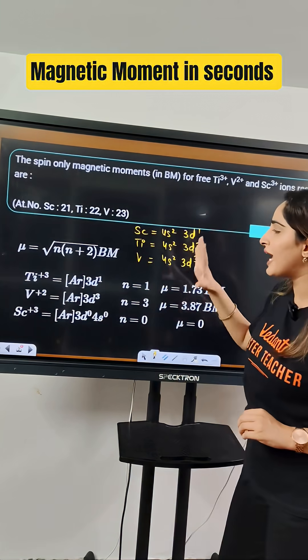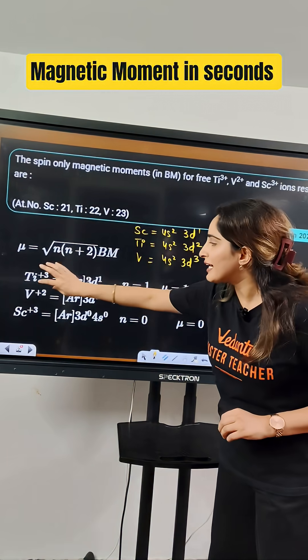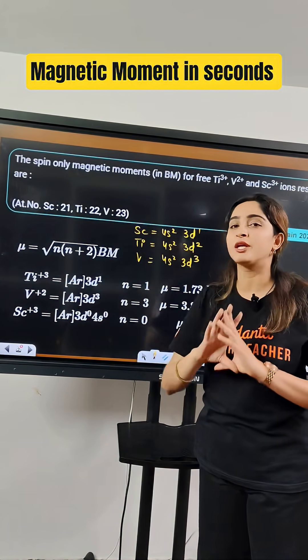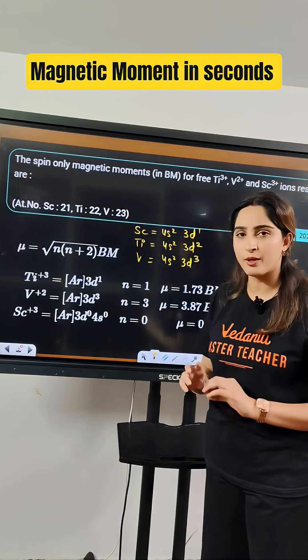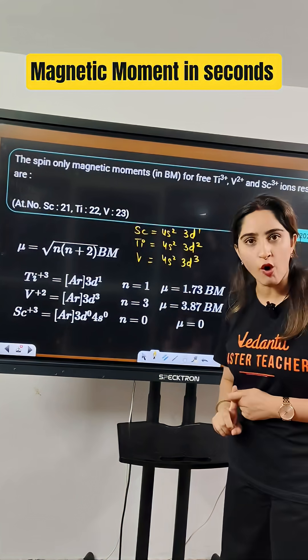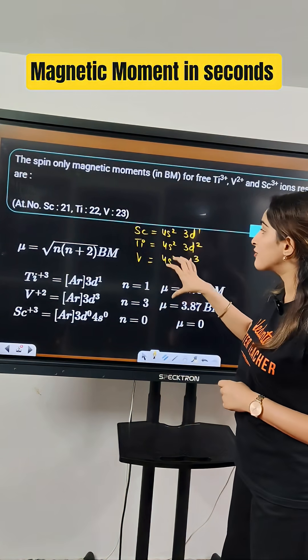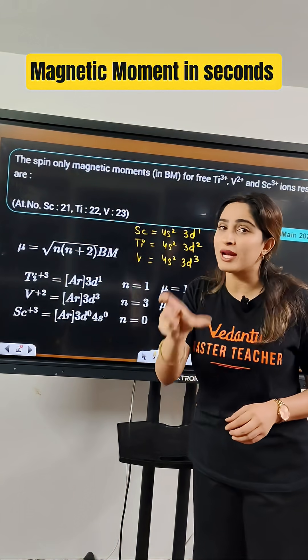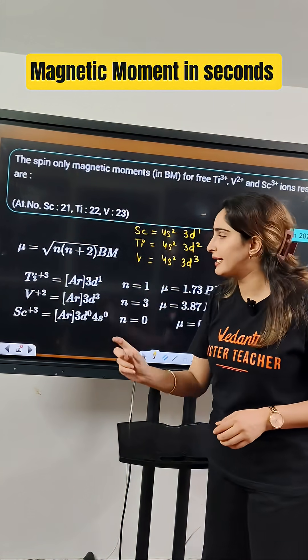So now let's see a question where they have asked you titanium 3+, vanadium 2+, and scandium 3+ magnetic moments. Firstly, we will write the electronic configuration. After that, we will take out the electrons from 4S first and then 3D.